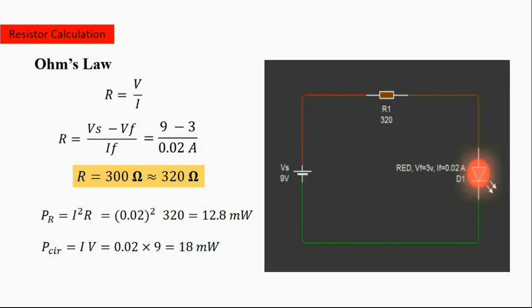Now we use a 320-ohm resistor in the circuit. As you can see, the LED is working fine.